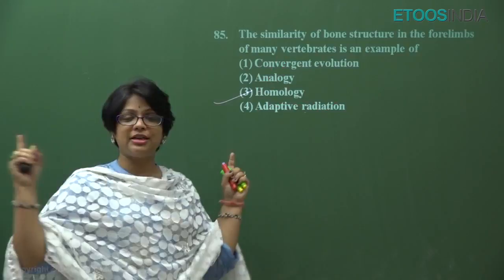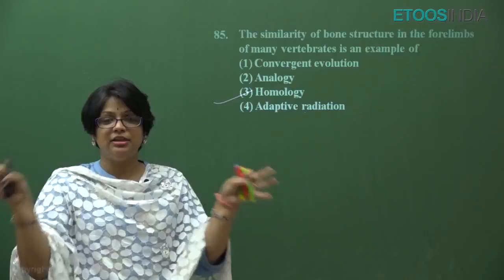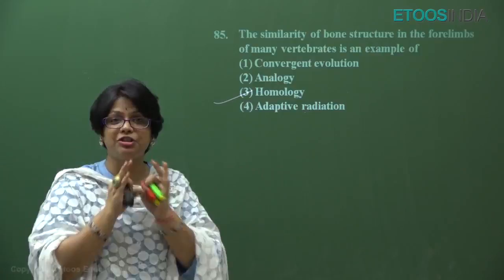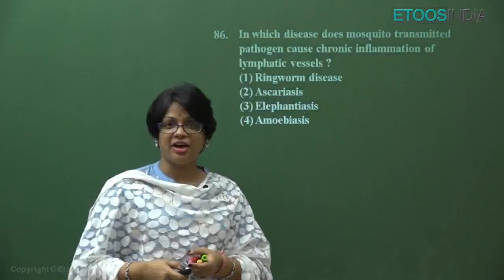Adaptive radiation means they have a common point, but due to different habitats they have radiated — like adaptive radiation in marsupials and placental mammals. But here this is a direct example of homologous organs, that is homology. The answer is option number three.